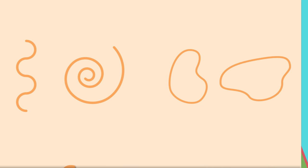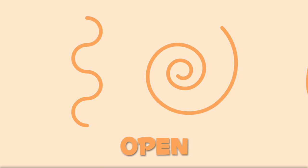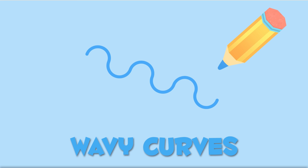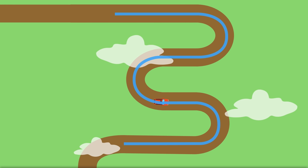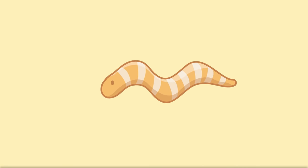Let's have a look at curved lines. Curved lines can be open or closed. Wavy curves are in the same group as curved lines, like this curvy path or this worm.